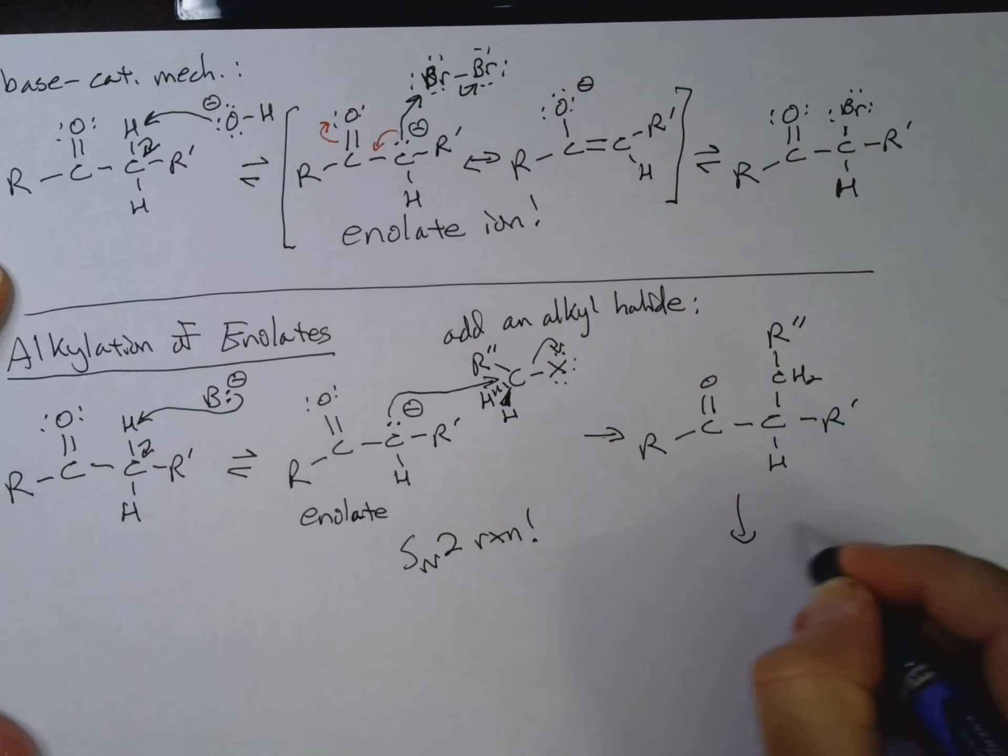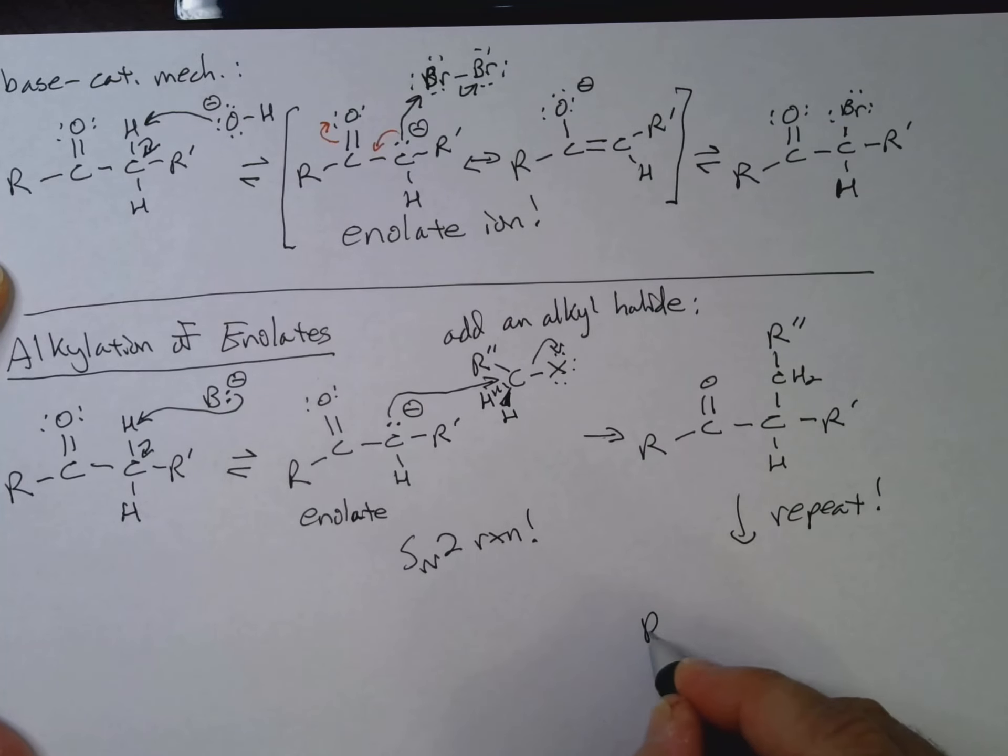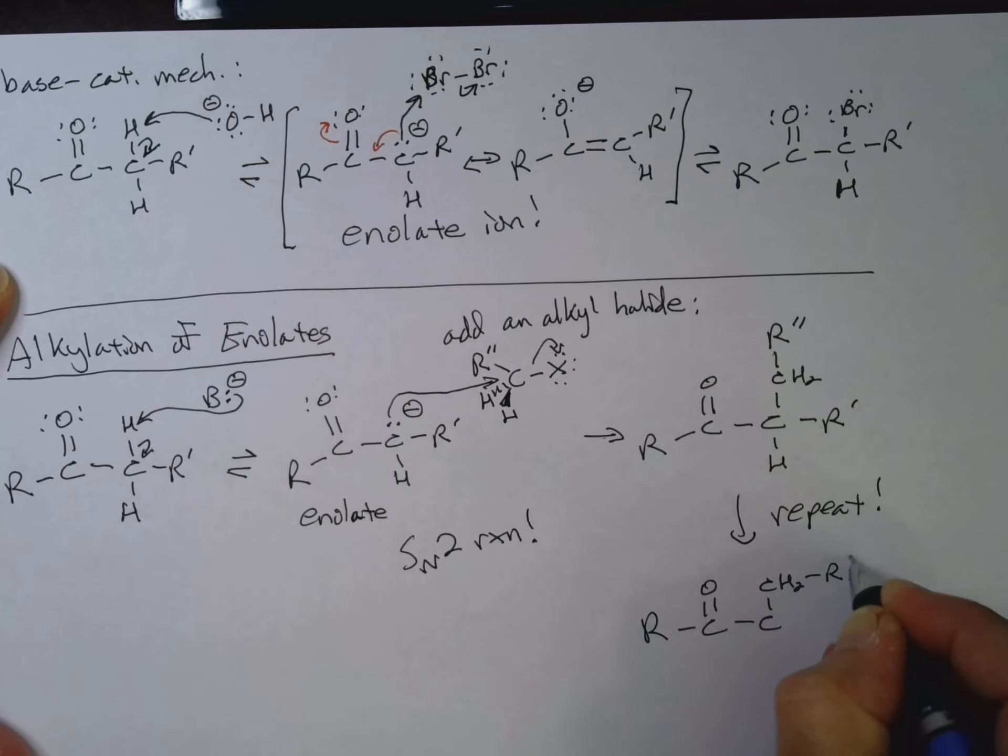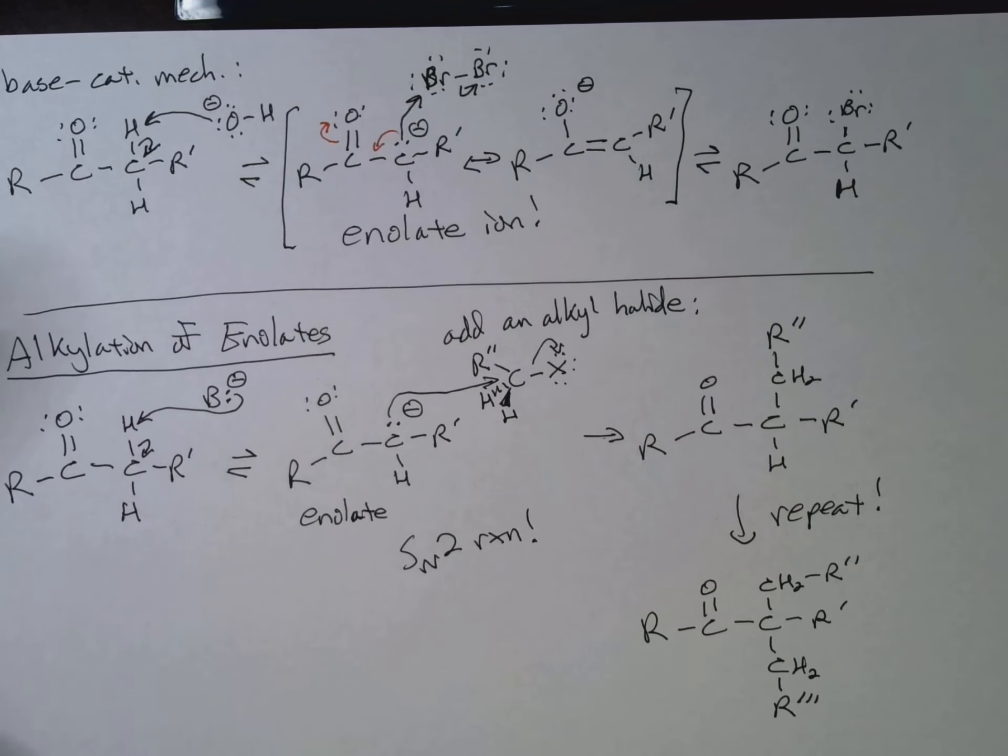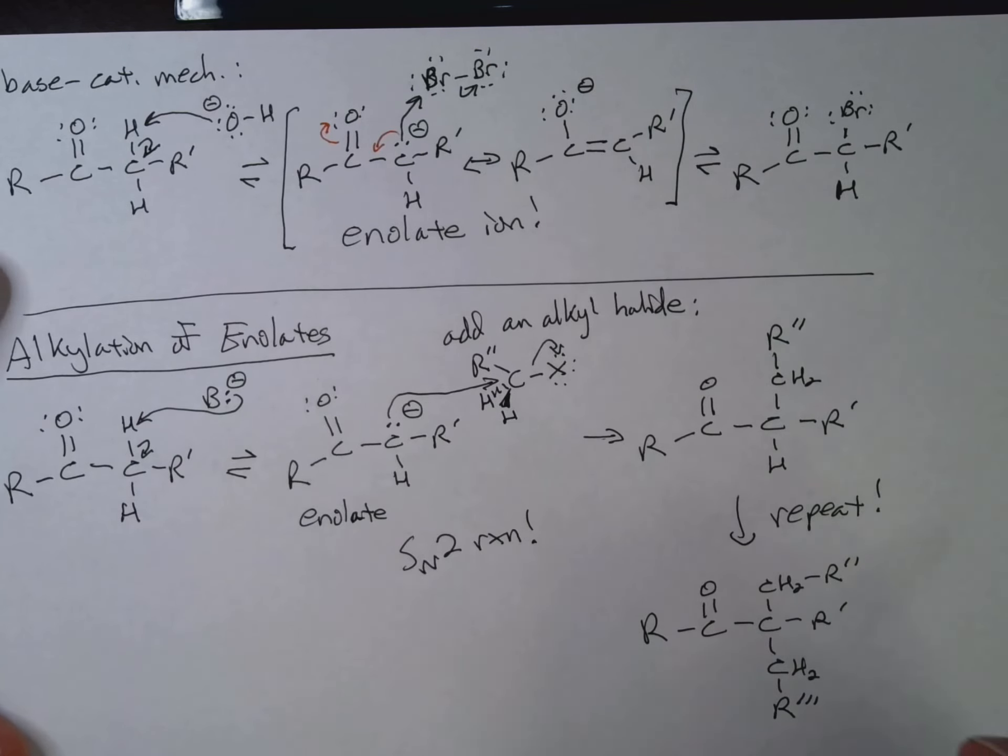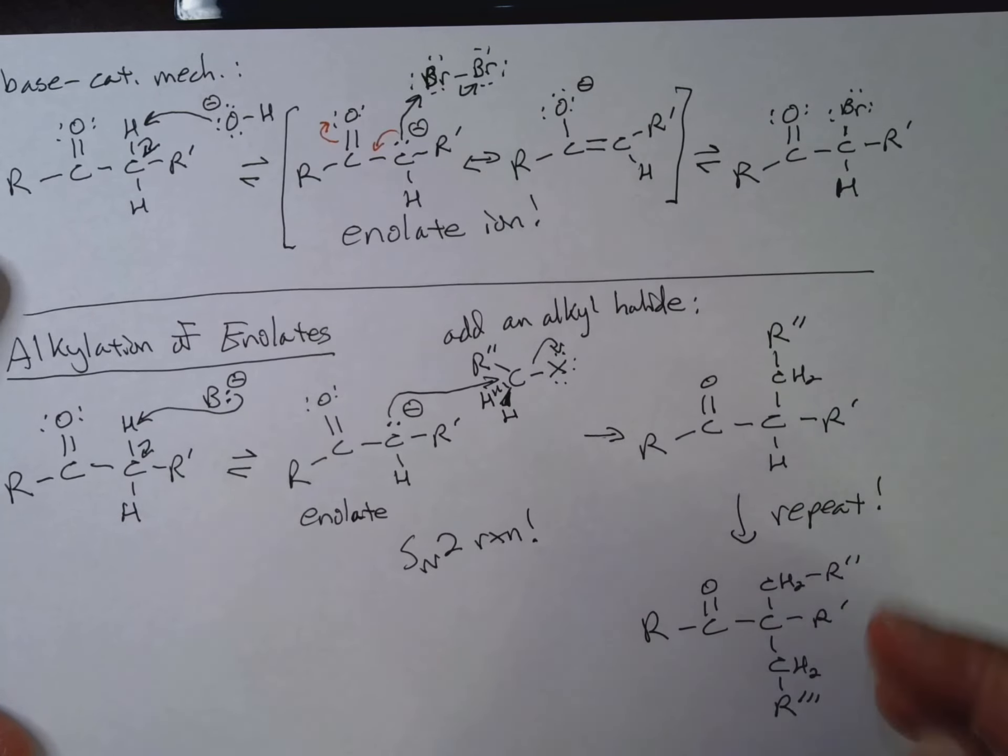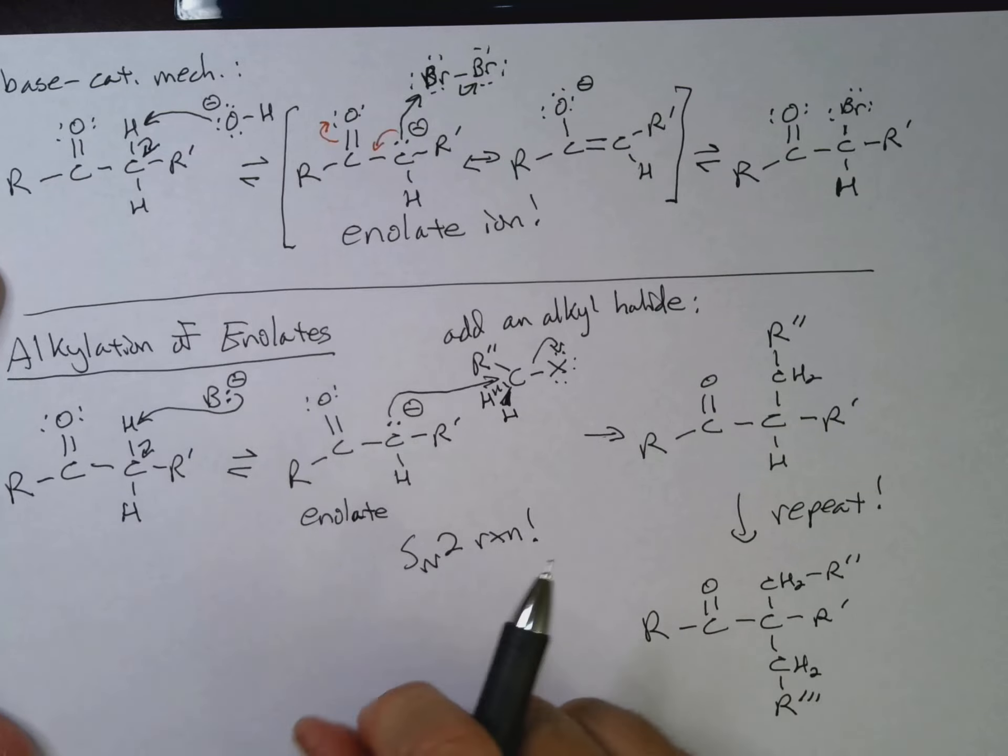And that's going to kick off our halogen. And we will end up with R-C double bond O-C-H-R prime-CH2-R double prime. We could actually repeat. And then maybe here we've got CH2-R triple prime. So we could stick different, potentially different, different alkyl groups on here. So it's a good way of sticking something on the alpha carbon.